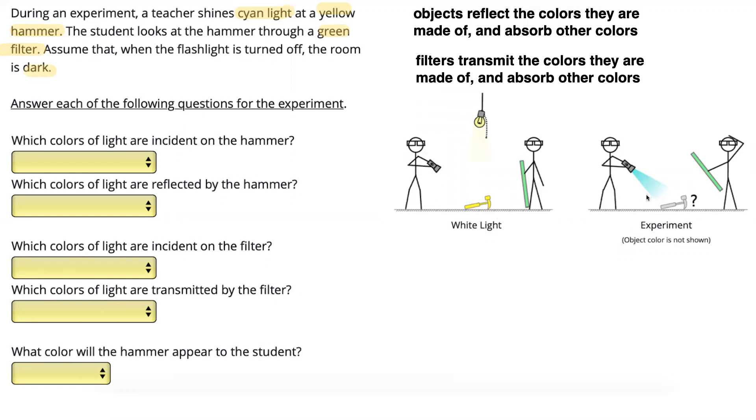Which means the light from that flashlight is the only light present in the room. We're not going to have any other light interfering. We need to figure out what color will the hammer appear to the student. So we're going to go through all the steps here. The first thing that happens is the cyan light is incident on the hammer.